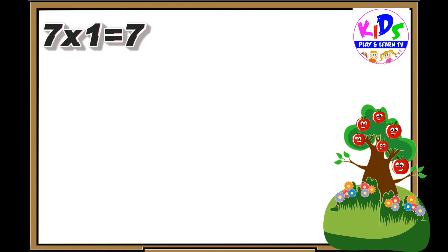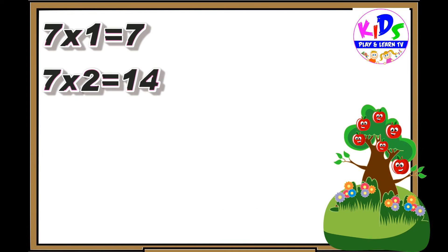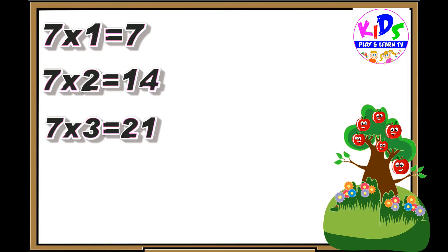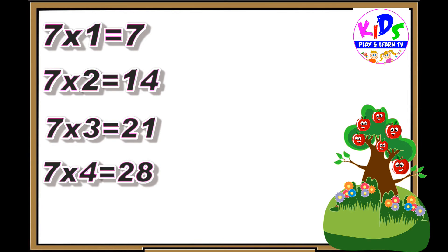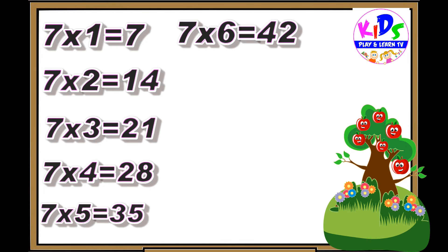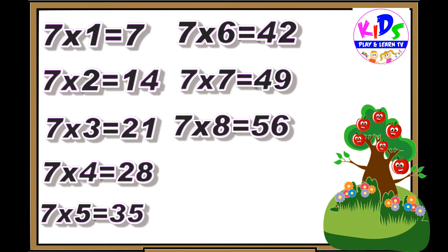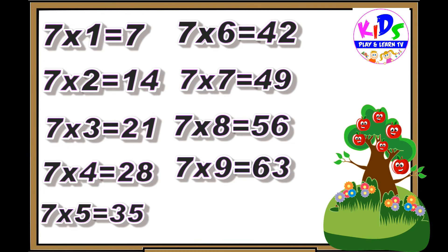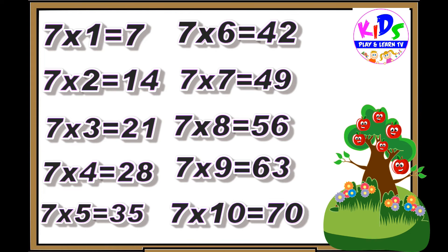Hey kids, let's repeat. Seven ones are seven. Seven twos are fourteen. Seven threes are twenty-one. Seven fours are twenty-eight. Seven fives are thirty-five. Seven sixes are forty-two. Seven sevens are forty-nine. Seven eights are fifty-six. Seven nines are sixty-three.